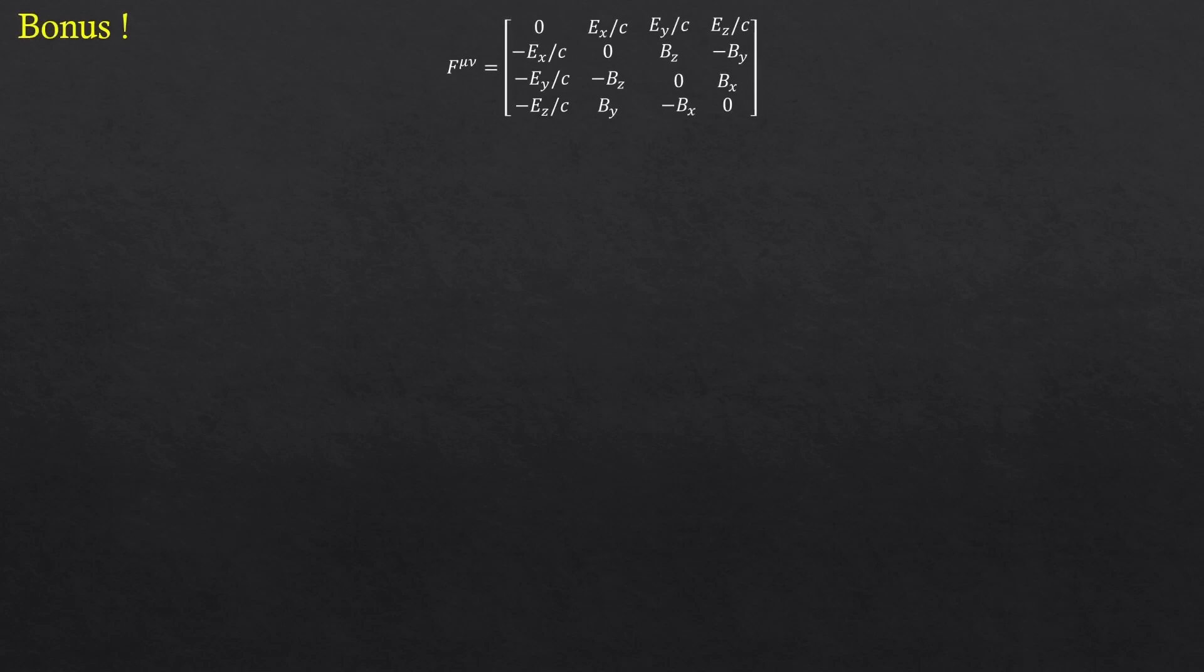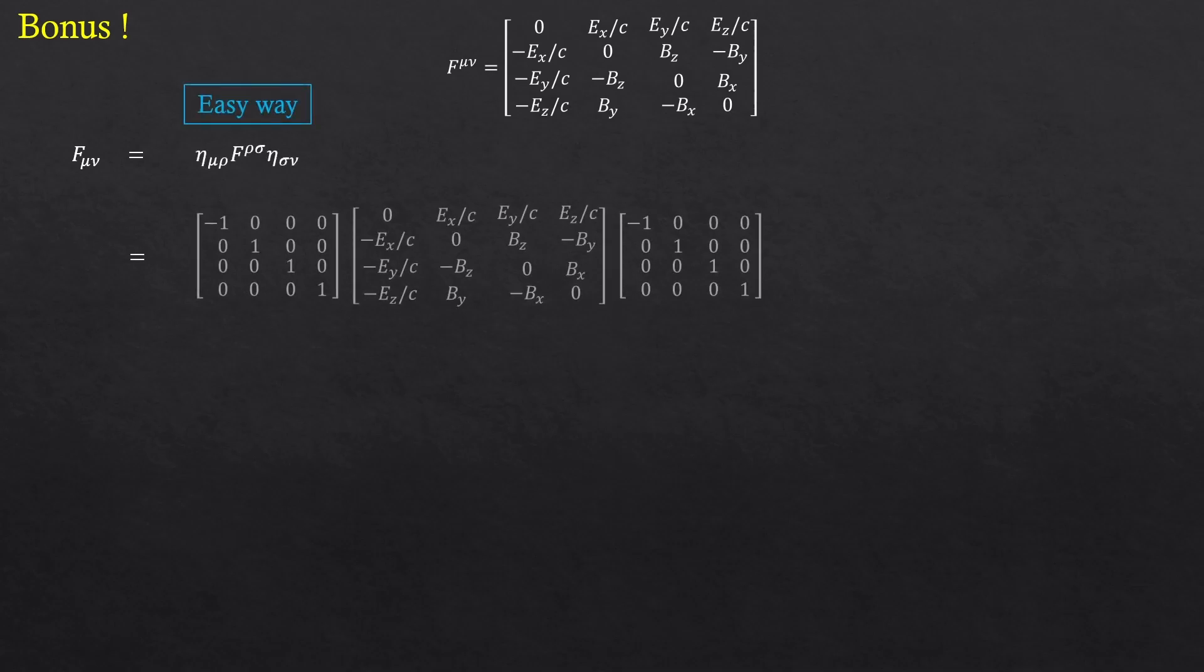So this is a bonus example. This is the electromagnetic field tensor from electrodynamics. Let's try to obtain the covariant version of the tensor. The easy way. Make sense? Because we have to lower the left and right indices. So we put one metric in the front and another metric in the back. All good.